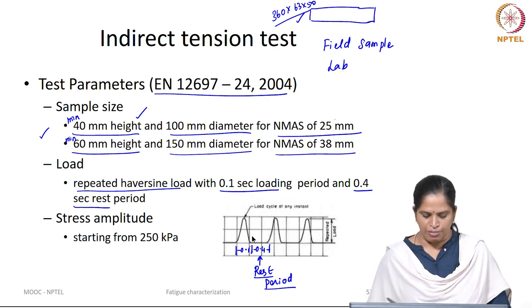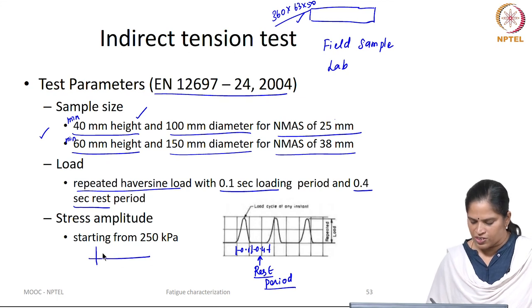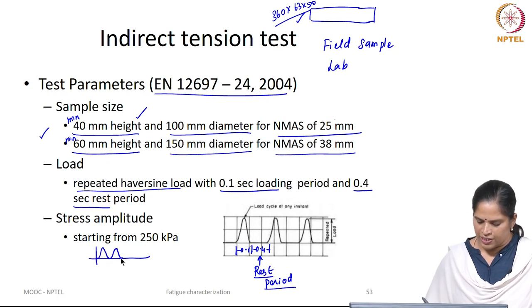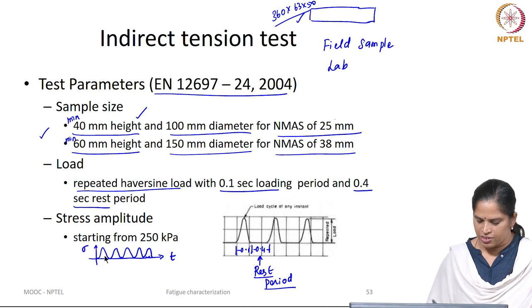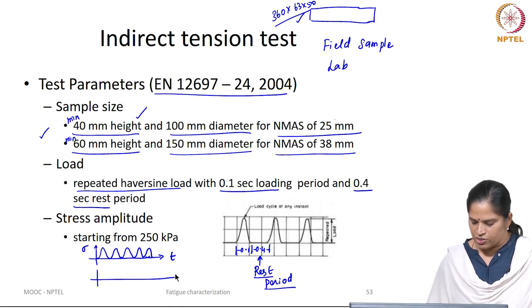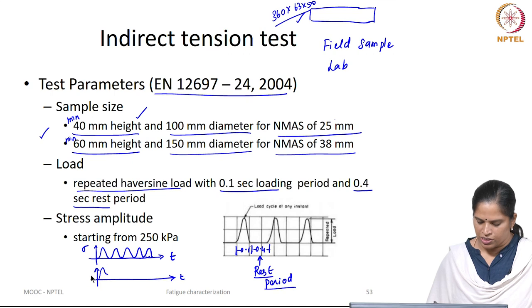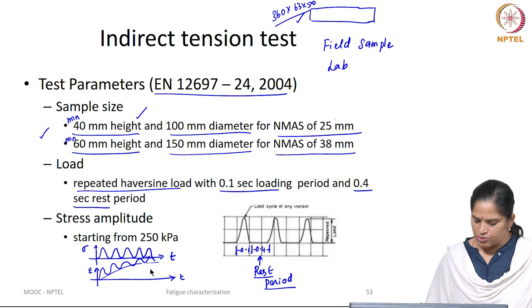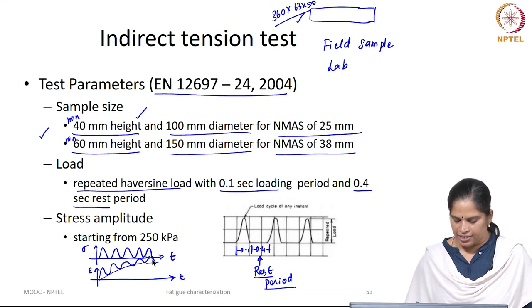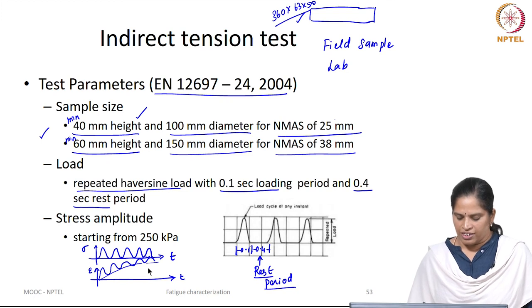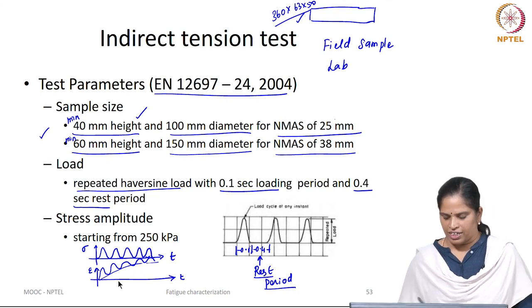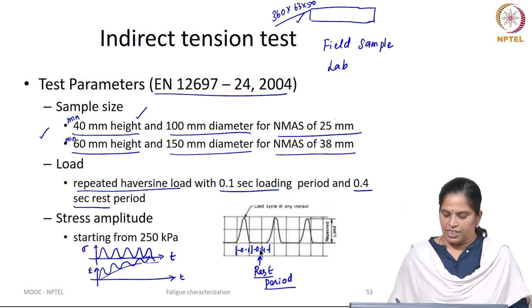This is not a continuous loading like in a 4-point beam bending test — we give a rest period at each and every load cycle. Without a rest period, if you apply continuous loading, there will be a residual deformation or residual strain at the end of each loading, and this residual strain starts accumulating over time. This is what we do for rutting characterization of bituminous mixtures, so it would be difficult to differentiate between rutting and fatigue cracking. Therefore EN standard recommends conducting the test with a rest period.